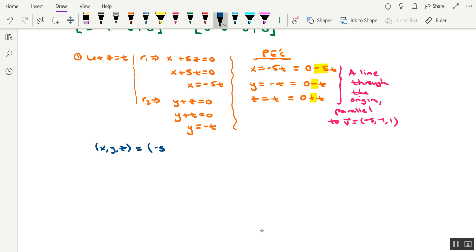And we can split this up as the sum of the zero vector, or the origin, plus t times, and these are going to be the components of v: negative 5, negative 1, 1.